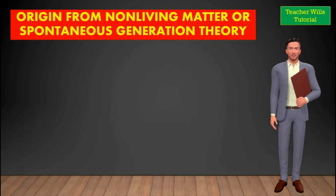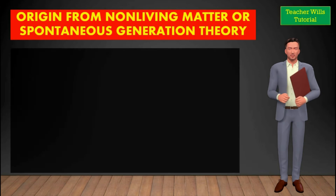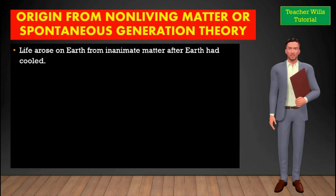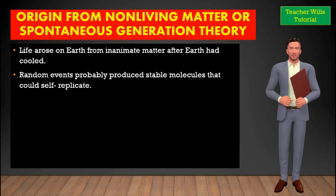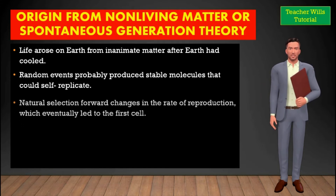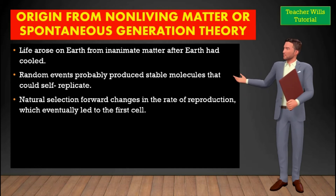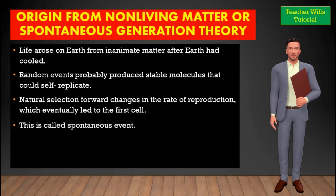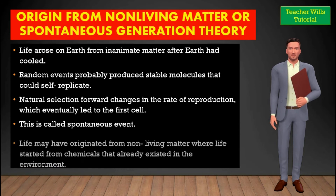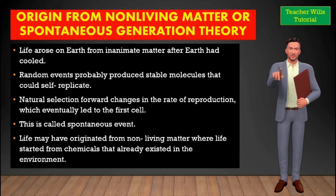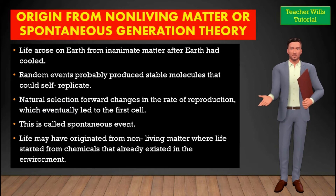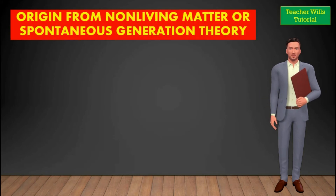The fourth theory of the origin of life is the origin from non-living matter, or spontaneous generation theory. Scientists believe that life arose on Earth from inanimate matter after Earth had cooled. They stated that random events probably produced stable molecules that could self-replicate, then natural selection favored changes in the rate of reproduction, which eventually led to the first cell. It is believed that under these conditions, life may have originated from non-living matter — where life started from chemicals that already existed in the environment.